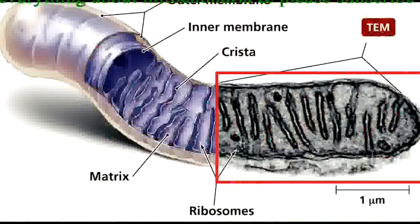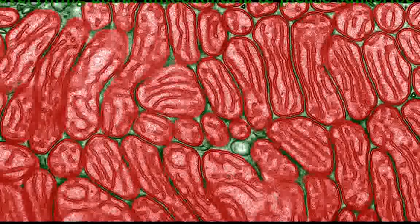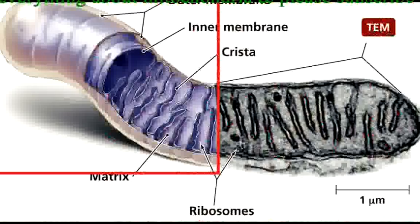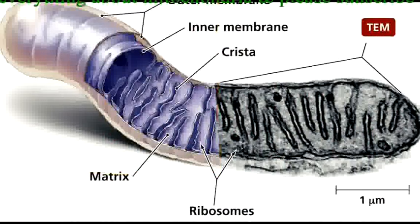The right side of this picture is from an electron micrograph like the one of the salamander cell we just saw, and the left side is a computerized model. In both images, we can see some of the important features of mitochondria.